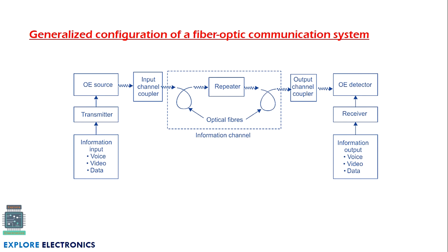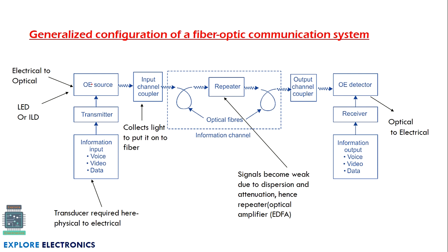Let us understand the block diagram or the general configuration of a fiber optic communication system. Initially we will have data to be transmitted — information in the form of voice, data, video, or image. We need to convert this into electrical form first, so on the input side we have a transducer. A transducer is a device that converts a physical quantity into an electrical quantity. Then we have a transmitter and electrical-to-optical converter, also called the OE source. These devices convert the electrical signal from the transducer into an optical signal. The OE source consists of an LED or ILD that converts the electrical signal into light, which is given to the input channel coupler. The coupler collects the light and puts it into the core of the optical fiber, which is the medium through which light travels.